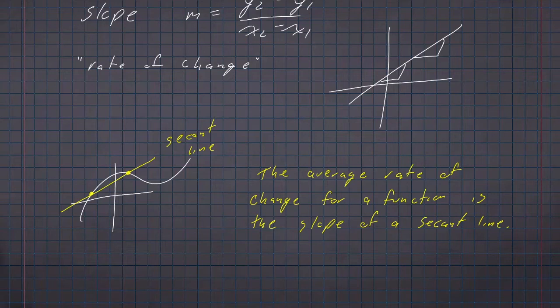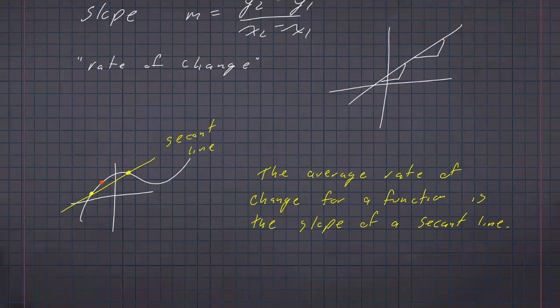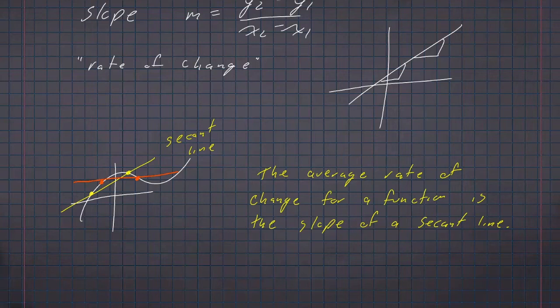If you choose a different two points to study, then the average rate of change between those two points will be different because it will generate a different secant line. Here I chose these two points and got the secant line in yellow. If I choose two points just slightly ahead, the secant line through those points is very drastically different, even though each of those points is not too far away from where we started. So the average rate of change depends on which two points you are trying to pass through.